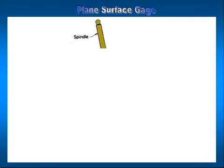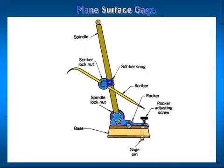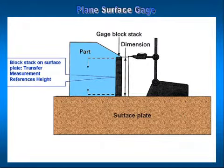Plain surface gauge. Surface gauges are used in many measurement applications, but since they do not have a direct reading scale, they are used in transfer or comparison measurements. The components include a spindle, scrubber lock nut, scrubber nut, scrubber, rocker, rocker adjusting screw, gauge pin, spindle, lock nut, and base. The surface gauge transfers a dimension established by a stack of gauge blocks to the part in order to measure it. This measurement is simply a comparison of a known standard to the part. The primary measurement made on the surface plate is height.